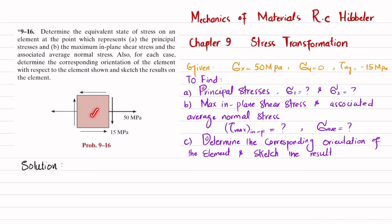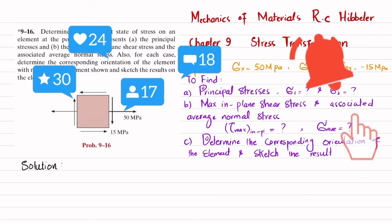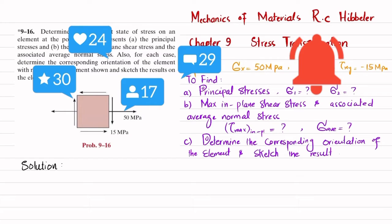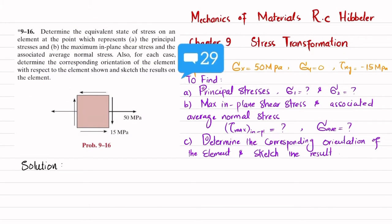So you can see this is the given state of stress where sigma x is 50 megapascal. There is no sigma y in the y direction — no stress in the y direction — and this shear stress tau xy is 15 megapascal, which will be negative. So we have to determine the principal stresses, maximum in-plane shear stress, and average stress, and then specify the orientation.